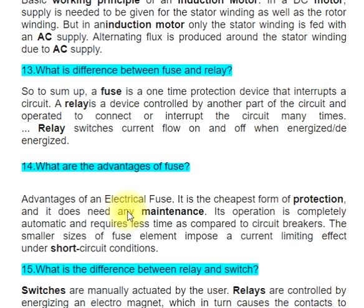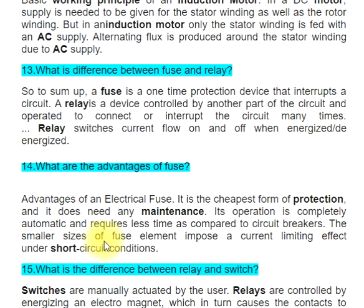Question 14: What are the advantages of a fuse? It is the cheapest form of protection and does not need any maintenance. Its operation is completely automatic and requires less time as compared to circuit breakers. The smaller sizes of fuse element impose a current-limiting effect under short-circuit conditions.